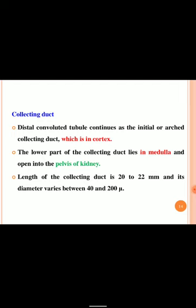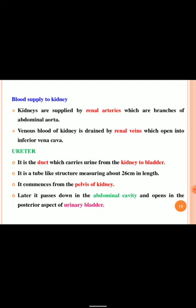The collecting duct begins as the initial or arched collecting duct in the cortex. The lower part of the collecting duct lies in the medulla and opens into the pelvis of the kidney. The length of the collecting duct is 20 to 22 mm and its diameter varies from 40 to 200 microns. Venous blood of the kidney is drained by renal veins which open into the inferior vena cava.